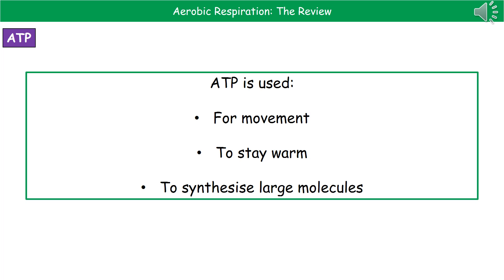Once respiration has made ATP, what is it actually used for? There are three key uses: first, we need ATP to move — it's only through ATP that our muscles can contract and we can move. Second, we need it to stay warm. Third, we need it to synthesize large molecules. All three of those things require energy, and energy is always in the form of ATP inside cells. Make sure you know both the word and balanced symbol equations for respiration, remember that it is an exothermic reaction, and that muscle and liver cells have more mitochondria than other cell types.